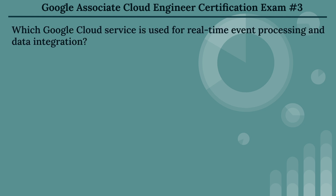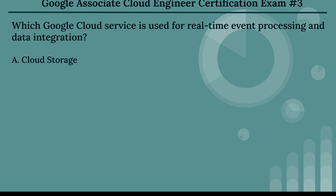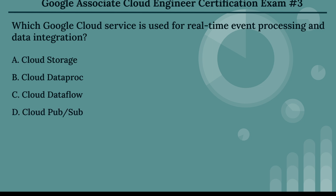The third question: which Google Cloud Service is used for real-time event processing and data integration? The options are: Option A, Cloud Storage. Option B, Cloud Dataproc. Option C, Cloud Dataflow. Option D, Cloud Pub/Sub.